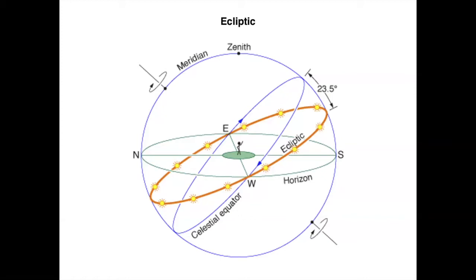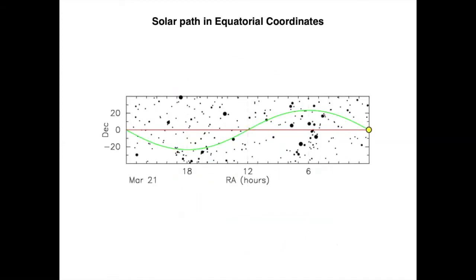Here you are seeing the celestial sphere, the celestial equator in blue, and the ecliptic in orange. So why is it that we would like to define ecliptic coordinate systems if we already have the equatorial system?